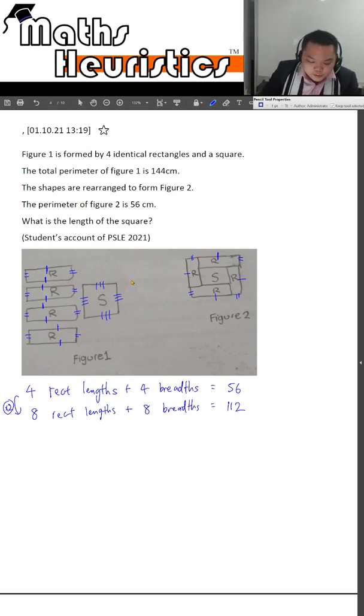So to find out the length of the square, we can see that 4 square lengths must be 144 cm minus 112 cm to give us 32 cm, so 1 square length alone will be 32 cm divided by 4 to give us 8 cm.